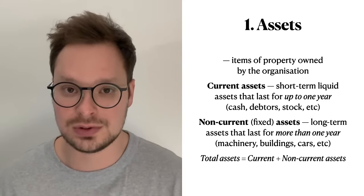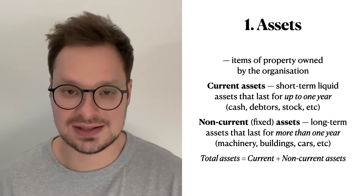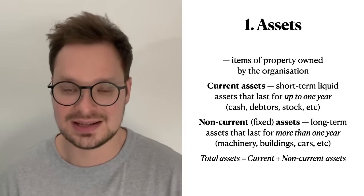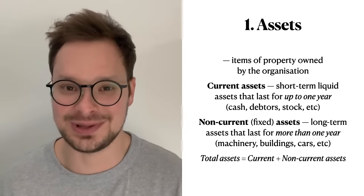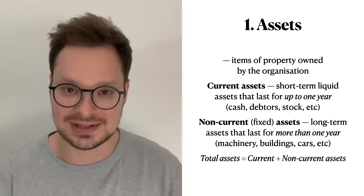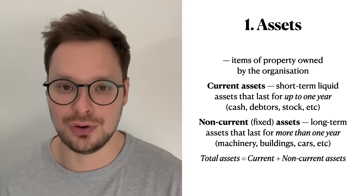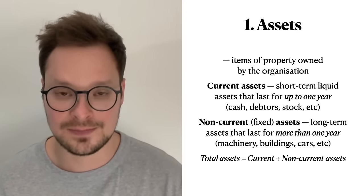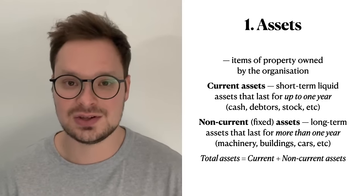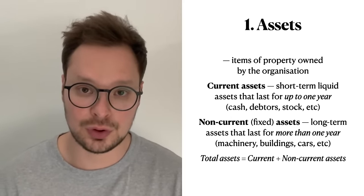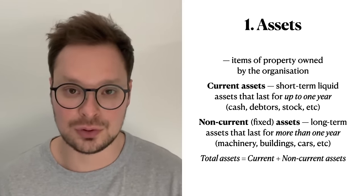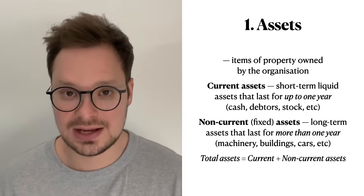The first part of the balance sheet is called assets. Assets are items of property owned by an organization. Assets can be current or non-current. Current assets are ones that last for less than 12 months — usually cash, debtors, and stock. Debtors refers to other businesses that owe you money; stock refers to raw materials and finished goods about to be sold. Non-current assets — or fixed assets — last for more than one year. Examples include cars, machinery, buildings, and land. Total assets is the sum of current and non-current assets.